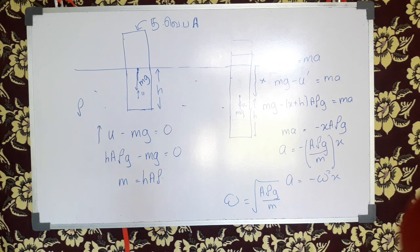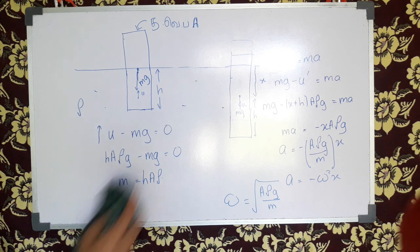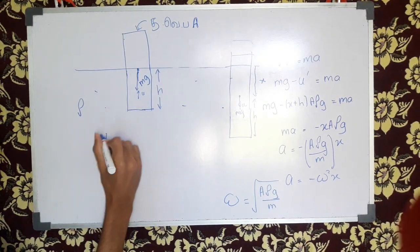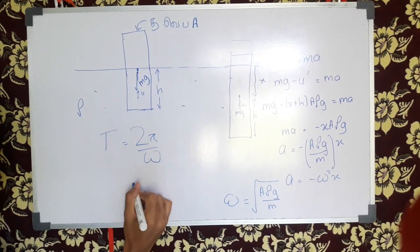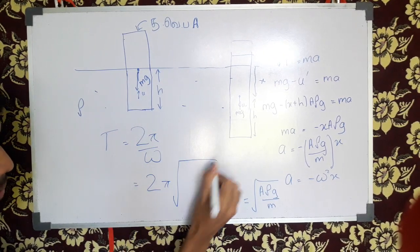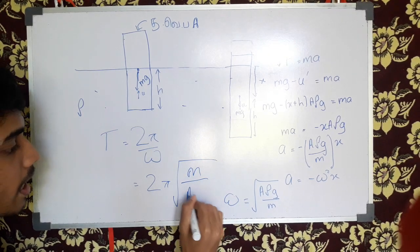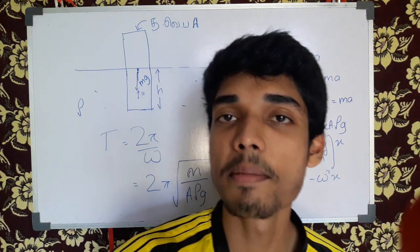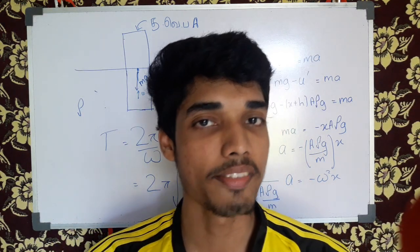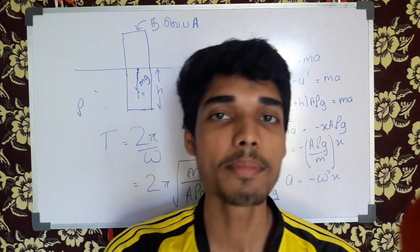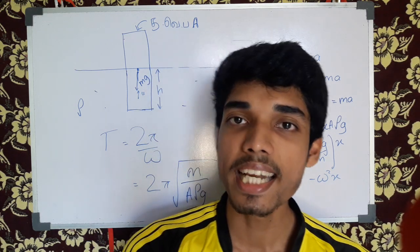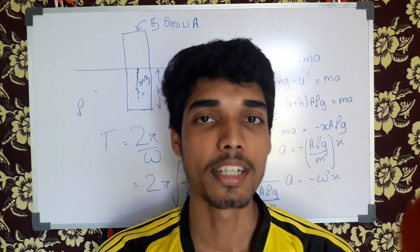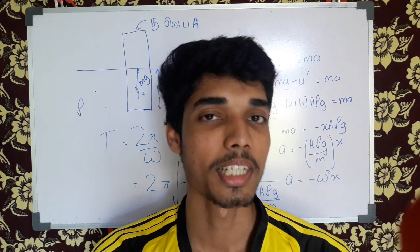If you look at it, you can see it. T equals 2 pi over omega. So 2 pi times the square root of m over A ρ g. So if you look at this video, you don't have to look at it more. If you look at it, subscribe to our channel. Thank you.